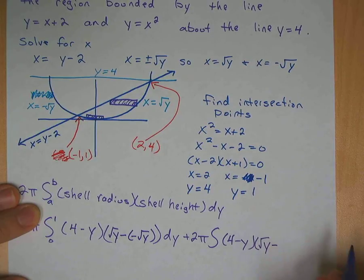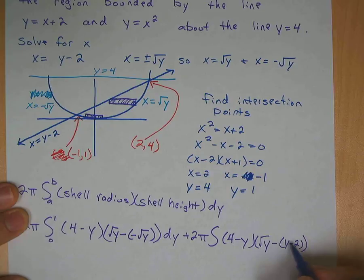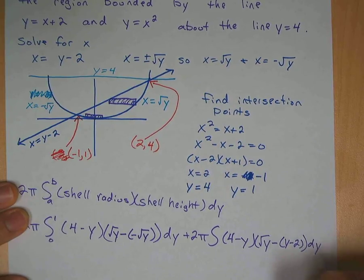Our top function is still square root of y, but now our bottom function is different. It's this. It's y minus 2, so minus y minus 2. Make sure you put that in parentheses, because you're subtracting the whole function, not just the y. And that's dy.